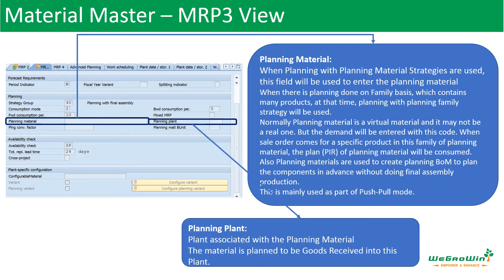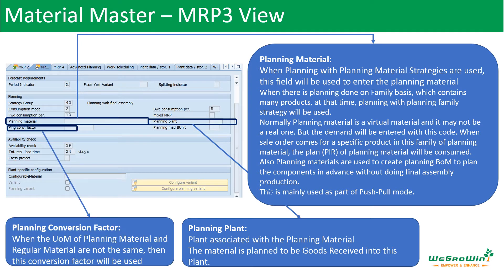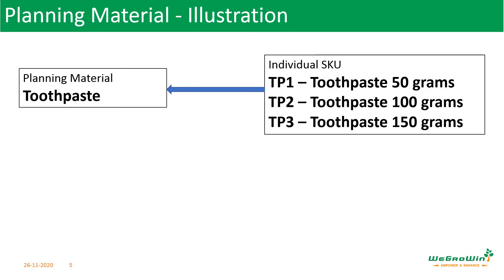The planning plant is the plant associated with planning this material, and it is where the planning material's goods need to be stocked. The planning conversion factor is used if there is a difference in unit of measurement between the planning material and the actual material. TP1, TP2, and TP3 individual materials are linked to the planning material in the MRP3 view. If you open the MRP3 view of TP1, the planning material will be 'toothpaste.' Similarly for TP2 and TP3 — this is how the link is created.